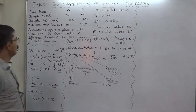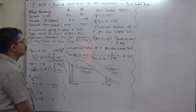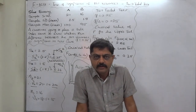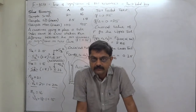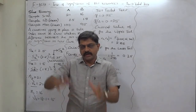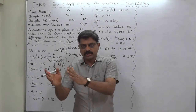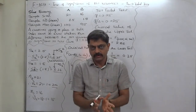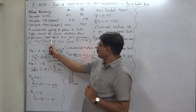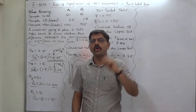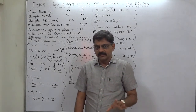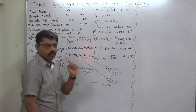A customer going to place a bulk order wants to know whether the difference between the two variances is significant or not. Take alpha 0.05. The customer is not interested in whether the variance of one population is greater than the other — he just wants to know whether there is any significant difference between the two variances. So this is the case of a two-tail test.